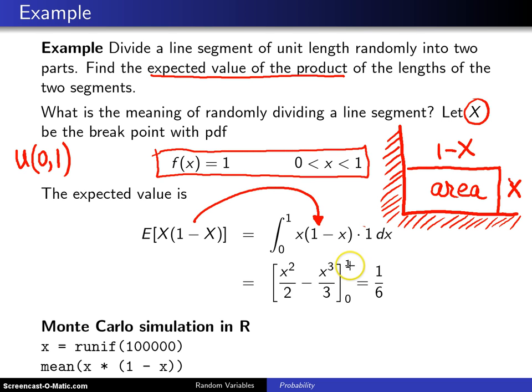When you plug in a 1, you get a half minus a third, which is 1 sixth. When you plug in 0, you get 0. So 1 sixth is the expected area here of that particular region.